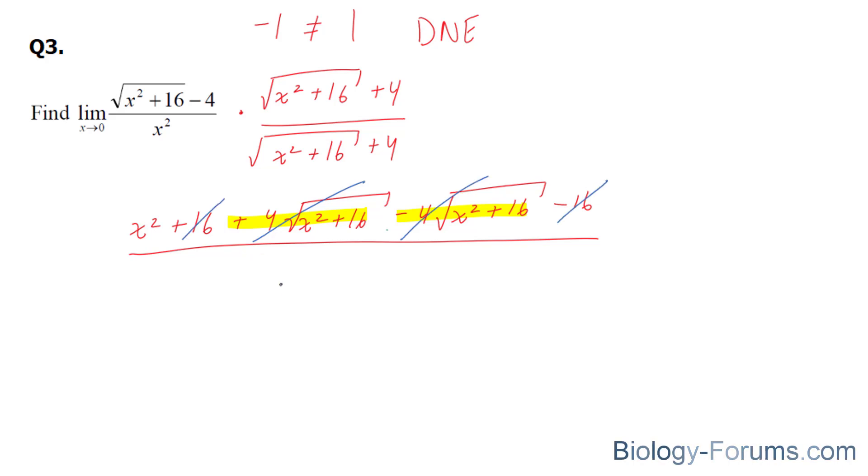And at the bottom, you end up with x squared times square root of x squared plus 16 plus 4. So if we rewrite this, we end up with x squared, which will also cancel out eventually, over square root of x squared plus 16 plus 4.